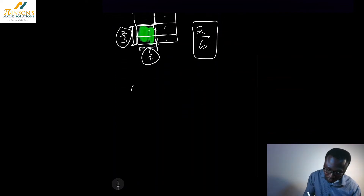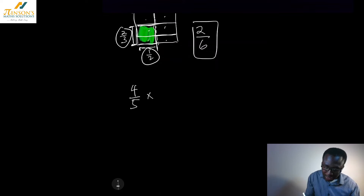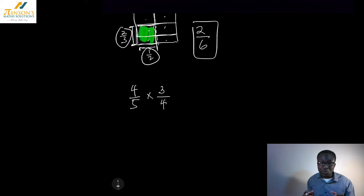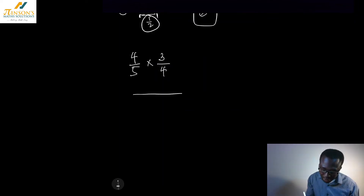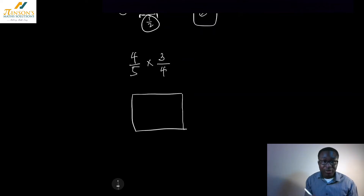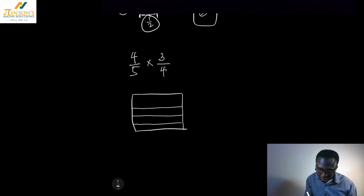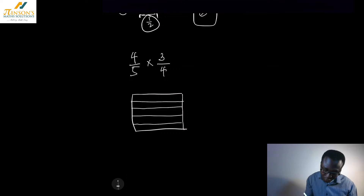Let's look at another example. I want to work out four fifths multiplied by three quarters. Will this work for any two fractions when multiplied? Again, I'm going to consider my one by one square — one metre squared. I'm going to have my four fifths, so I'll split into fifths this way: one, two, three, four, five. So from there to there — that is my four fifths.